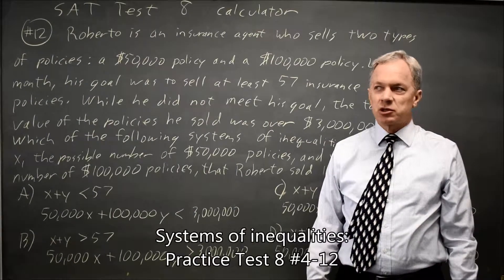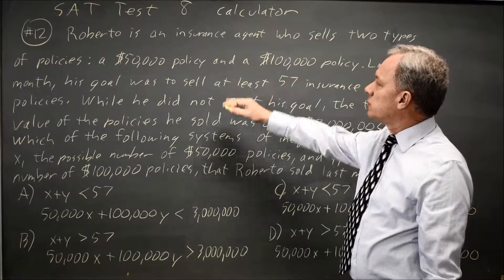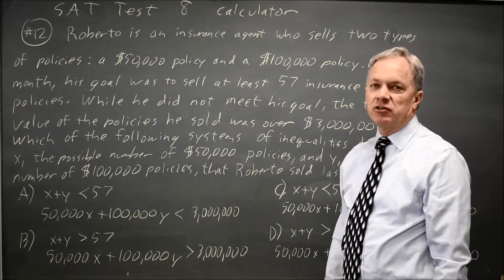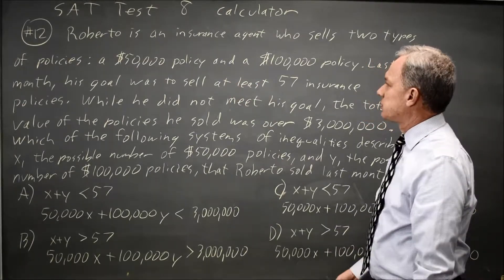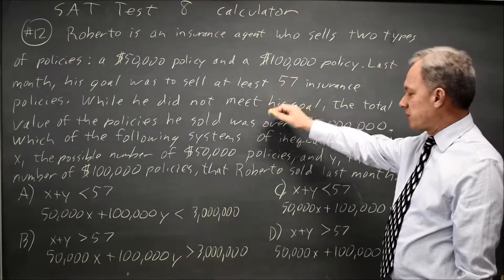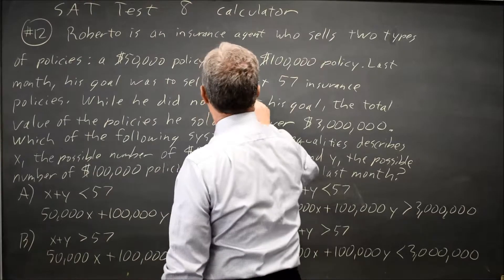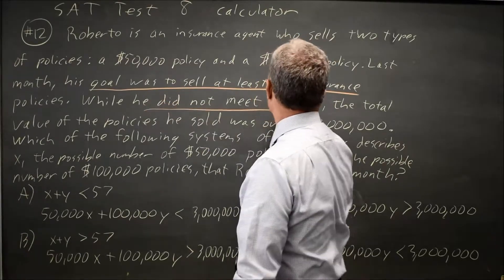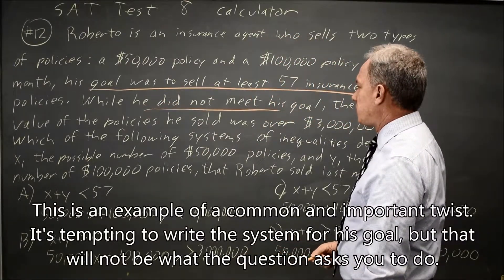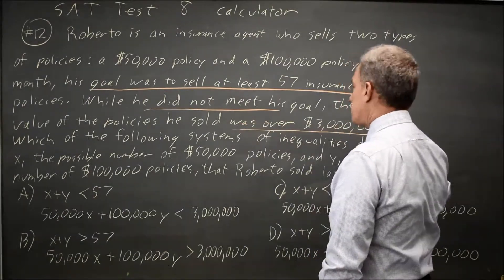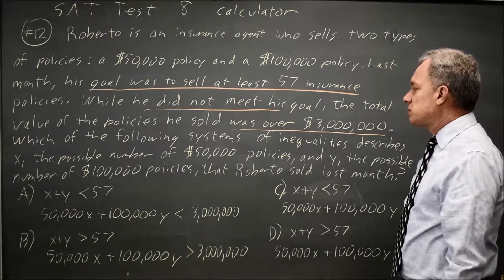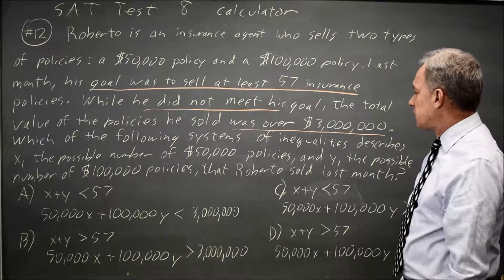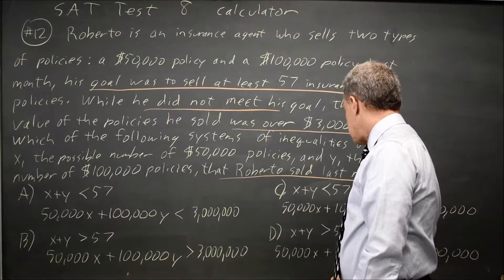This is SAT test eight, calculator question number 12. College Board gives us a description of an insurance agent's sales and goals in terms of $50,000 insurance policies and $100,000 insurance policies. They say his goal was to sell 57 policies, and he did not meet his goal. The total value of the policies he sold was over $3 million. We need to find which system of inequalities describes X, the number of $50,000 policies, and Y, the number of $100,000 policies that Roberto actually sold last month.